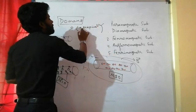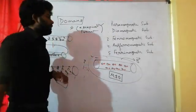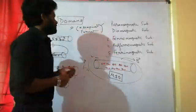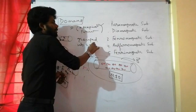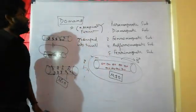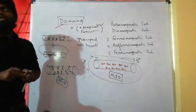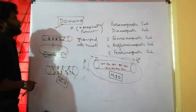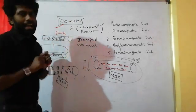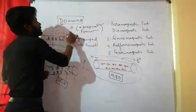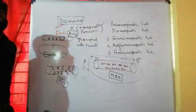Especially in ferromagnetic substances, the metal ions are grouped into a small region known as domains. Each domain acts as a tiny magnet.